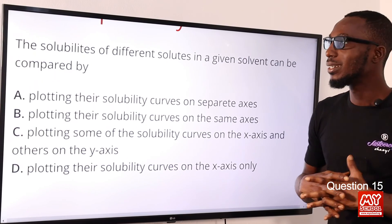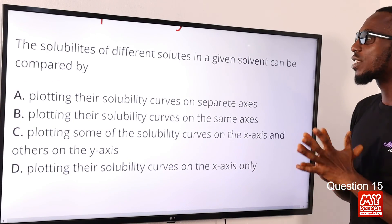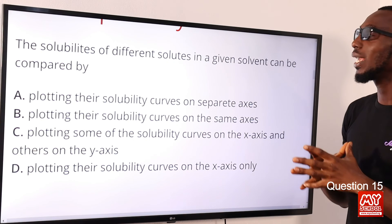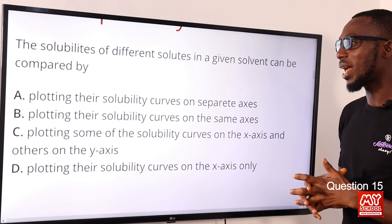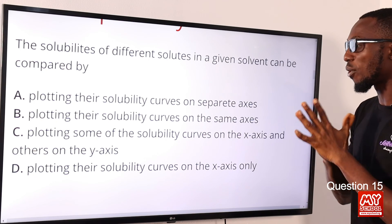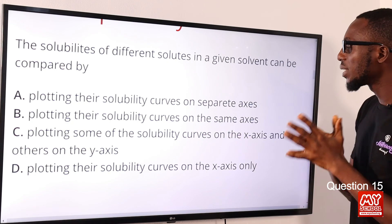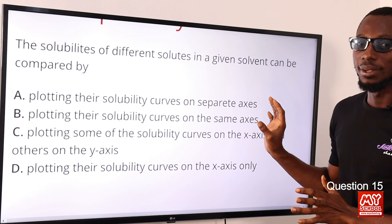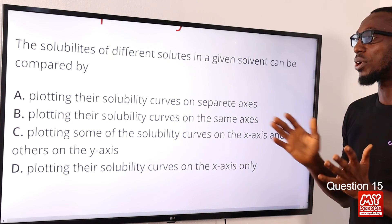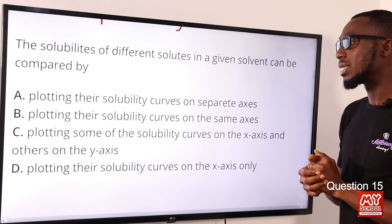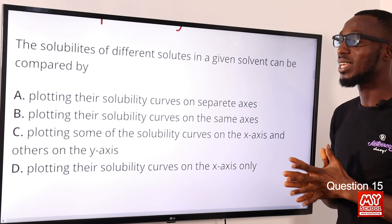Question 15: The solubilities of different solutes in a given solvent can be compared by what? How do you make that comparison? You do that by plotting their solubility curves or solubility curves on the same axis—plural. You're using the same axis and you're plotting their curves on it. The correct option is option B: by plotting the solubility curves on the same axis.